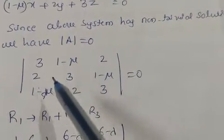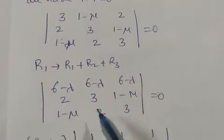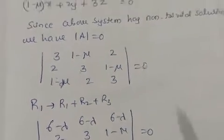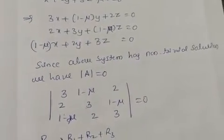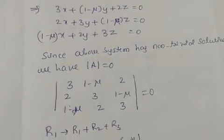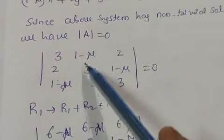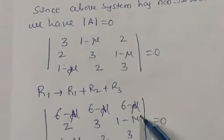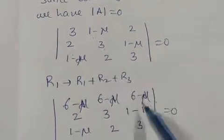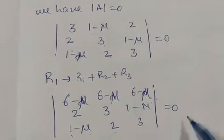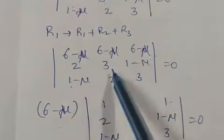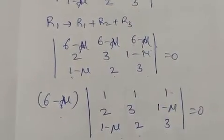Apply R1 → R1 plus R2 plus R3. Adding: 3+2+1=6, (1-mu)+3+2=6-mu, 2+(1-mu)+3=6-mu. So the first row becomes [6-mu, 6-mu, 6-mu]. Taking (6-mu) common from R1, the remaining first row is [1, 1, 1], with second row [2, 3, (1-mu)] and third row [(1-mu), 2, 3] equals 0.